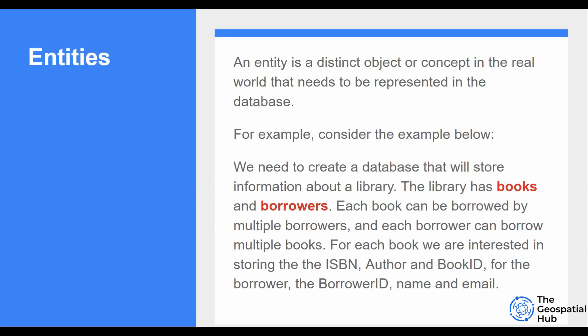The first concept is the entity. An entity is a concept that is very important for our application — they are normally expressed as nouns. Entities are distinct objects or concepts of the real world that need to be represented in the database. Whenever we have a problem, to detect what the entities are, we have to look out for the nouns, because those are what will become our tables in the database.